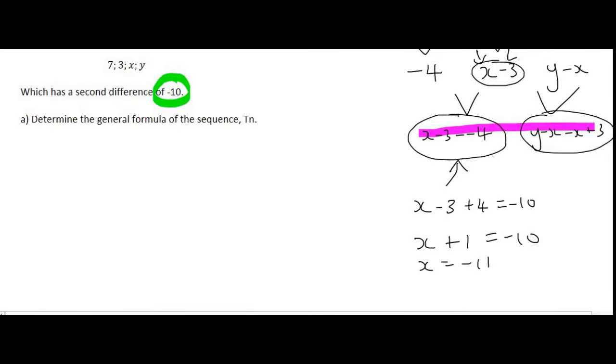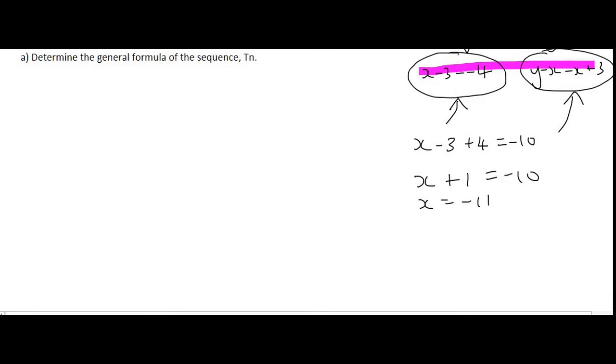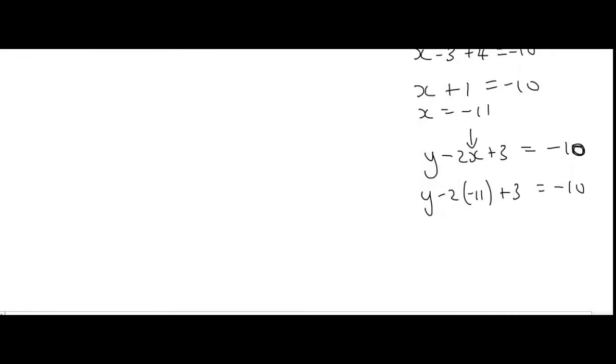What we can now do is use this expression over here, which if you simplify says y minus 2x plus 3. Well, that should also equal minus 10, because it's also a second difference. However, the nice thing is that we now have the value of x, so we can just fill that in, in a bracket, as minus 11 plus 3 equals minus 10. We can then go and simplify. Minus 2 times minus 11 is plus 22, plus 3 equals to minus 10. If you then solve for y, you're going to get a final y answer of negative 35.